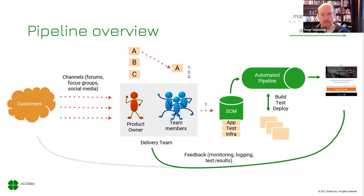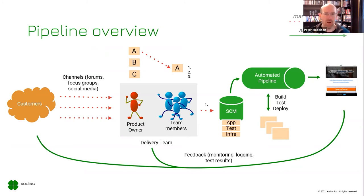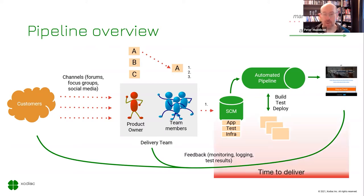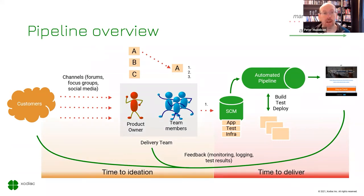We need our feedback: the monitoring, the logging, the test results, which come back to the delivery team and customers so we can ask, 'Was this what you were looking for?' We then work iteratively and incrementally, delivering more and more value. We can measure to understand how we can possibly improve — what can we do to make this go smoother, better, and faster so we're really delivering value?